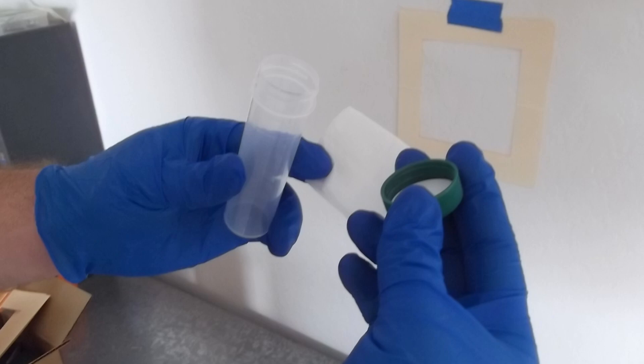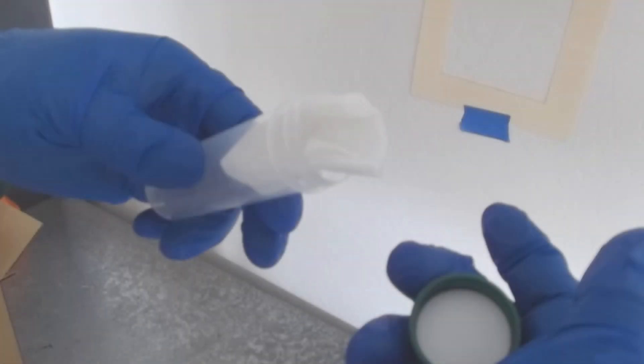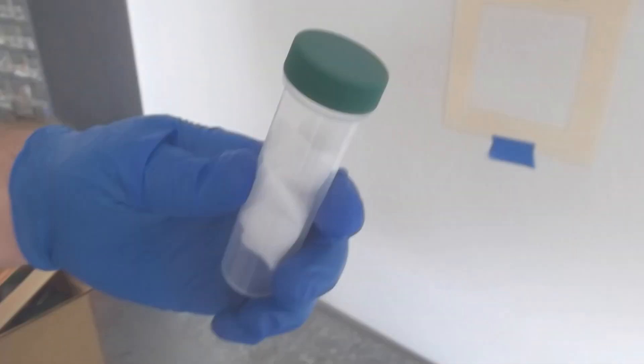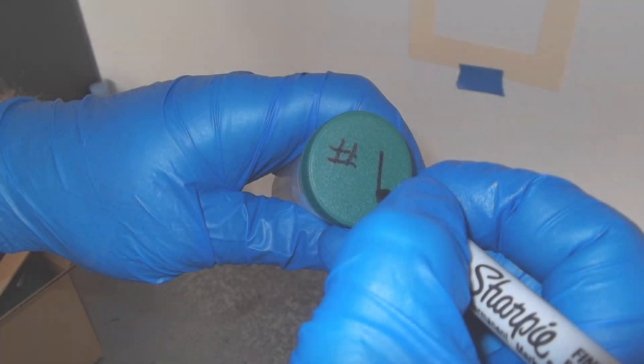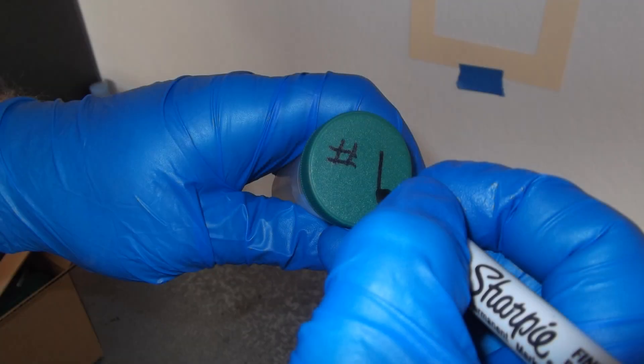Fold the wipe again and insert it into a clean 50-milliliter vial. Be sure to cap the vial securely and label it with a unique sample identification number or name.